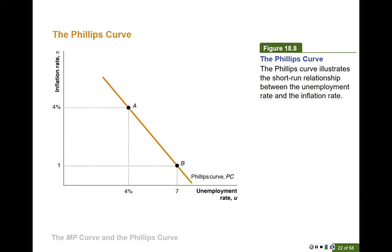The Phillips curve is a very famous macroeconomic model that describes the relationship between unemployment and inflation in the short run. From this graph, we can see the Phillips curve is a downward sloping curve, meaning there's a negative relationship between the unemployment rate U and the inflation rate PI. But what's the economic reason behind this? Why does a high unemployment rate mean lower inflation, and why does low unemployment mean a higher inflation rate?